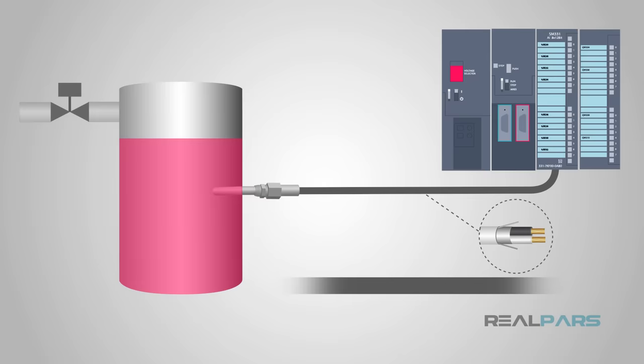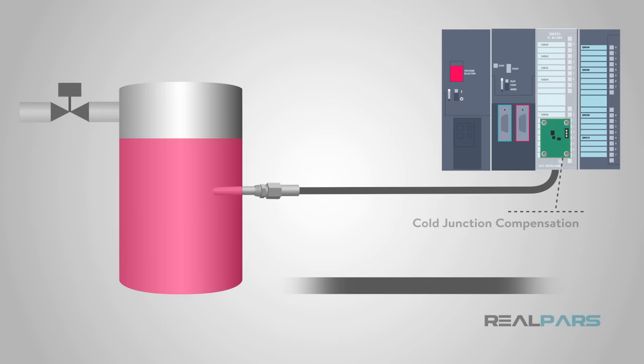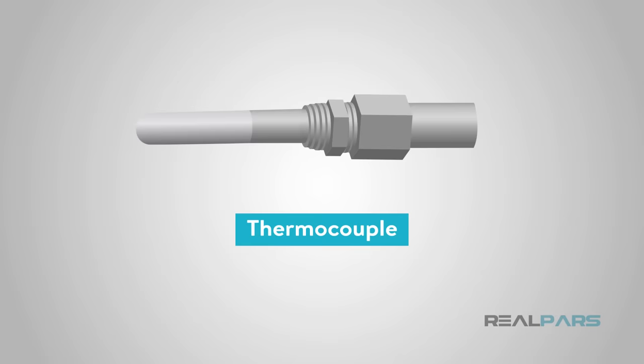Finally, these sensors need cold junction compensation, a feature which is built into most thermocouple modules, but some require external devices for this purpose. The temperature range of a thermocouple is specified by a single letter, i.e., a type J thermocouple is a common variety with well-known characteristics.